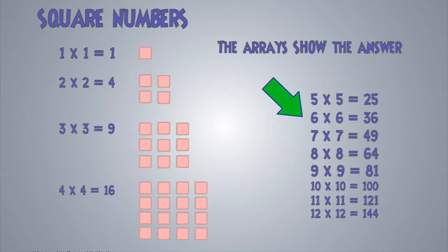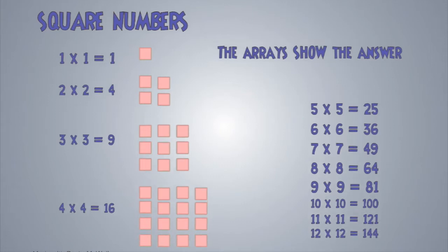You'll see on the right hand side, further down, all the way up to 12 times, our square numbers.